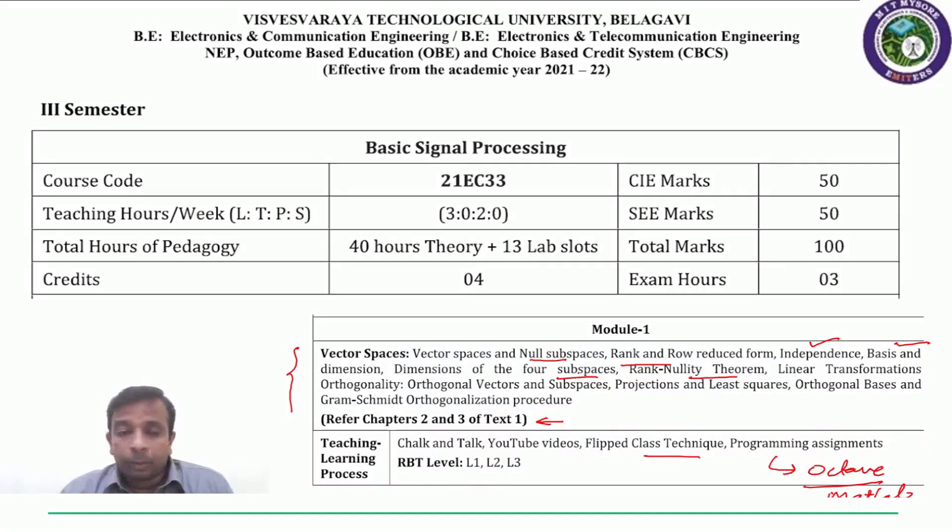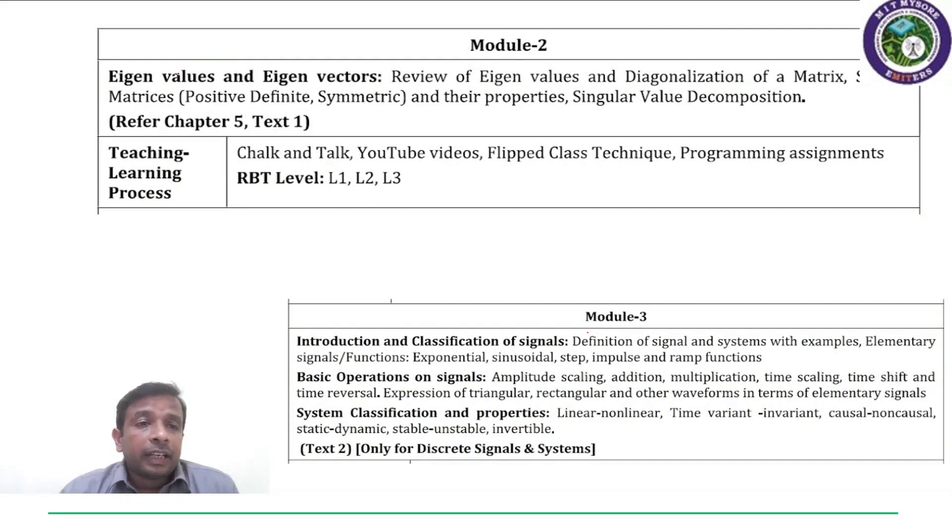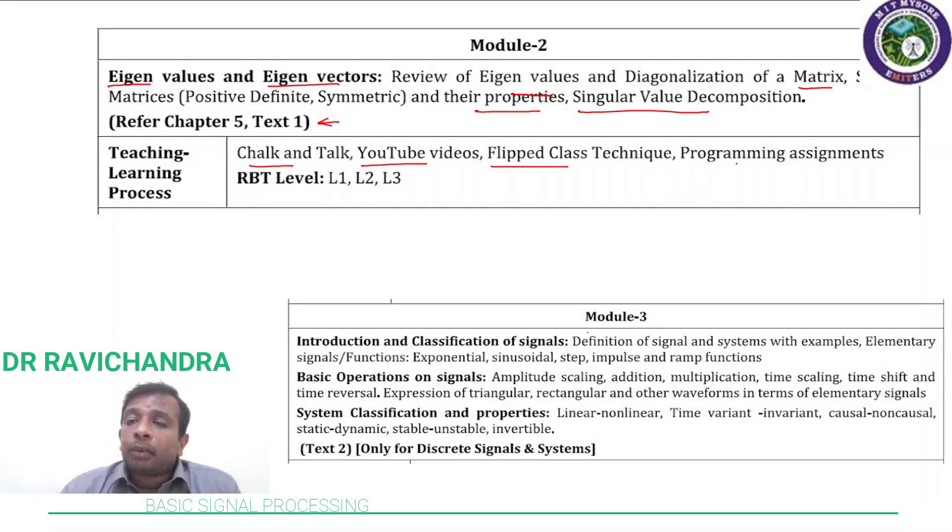In Module 2, we continue with matrices: eigenvalues and eigenvectors. This is a review because it is assumed that most of the first year mathematics syllabus consists of eigenvalues and diagonalization of matrix, special matrices like positive definite matrix, symmetric matrix and their properties, and SVD or singular value decomposition. We will be using Gilbert Strang's textbook, Chapter 5, with classroom sessions, YouTube videos, flipped class techniques, and programming assignments using Octave.